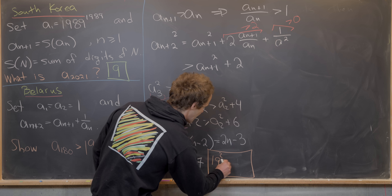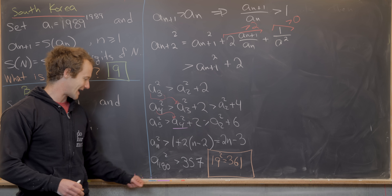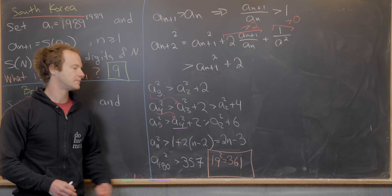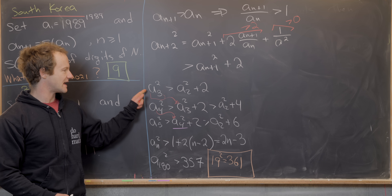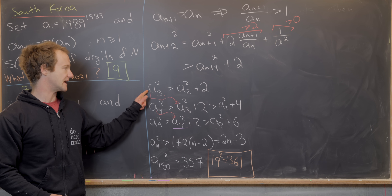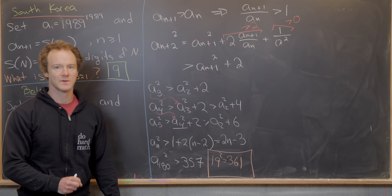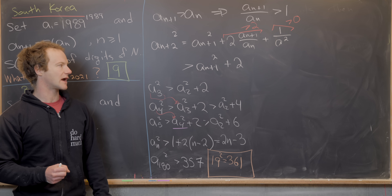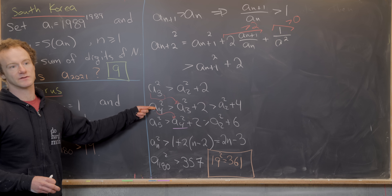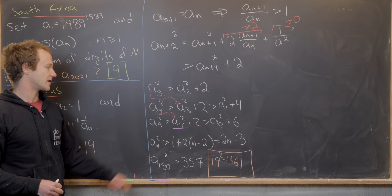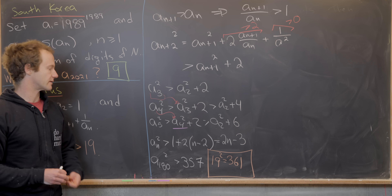This is a lower bound for A_{180}, but it's not sufficient — because 19² = 361, and 357 < 361. So this approach doesn't bound it high enough. The issue is we started making approximations from A₂, but what if we calculated a few values explicitly and started our approximations further along?